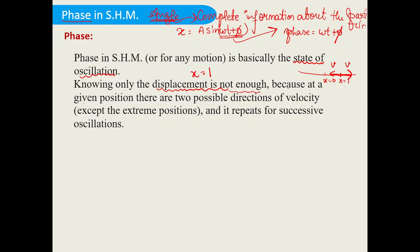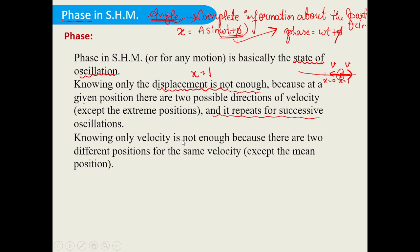At a single position you get two velocities, and this repeats for successive oscillations — at x = 1 in each oscillation you get the same ambiguity. Similarly, knowing only the velocity is also not enough, because there are two different positions for the same velocity. For example, if velocity is 2 m/s, the particle could be at two different positions moving in opposite directions along the x-axis.